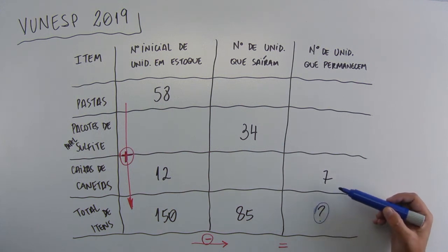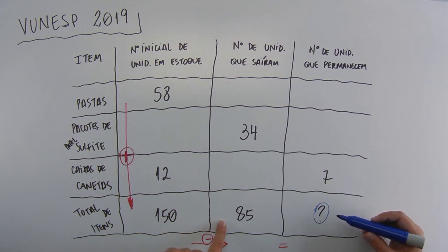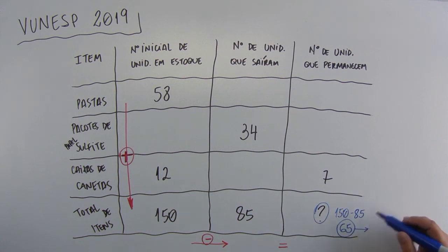To solve this, we just do 150 minus 85, which will give - so I'll put the calculation to take a little longer - 150 minus 85, which will give 65. And 65 is in alternative B.